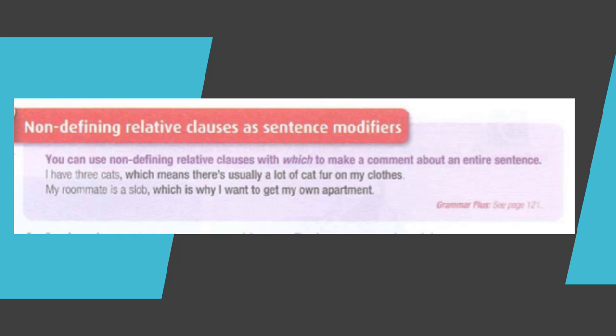You can use non-defining relative clauses with 'which' to make a comment about an entire sentence. For example: 'I have three cats, which means there's usually a lot of cat fur on my clothes.' Or: 'My roommate is a slob, which is why I want to get my own apartment.'